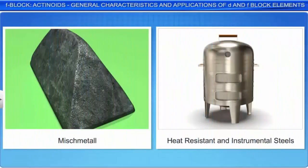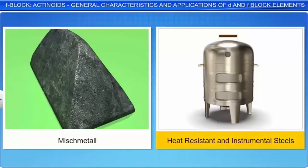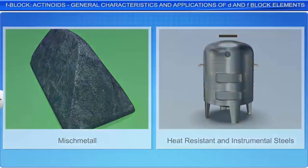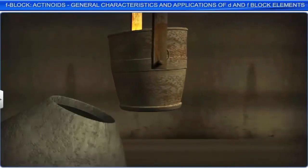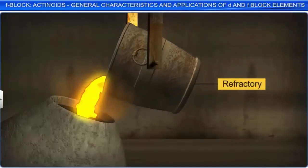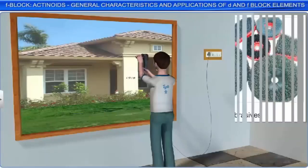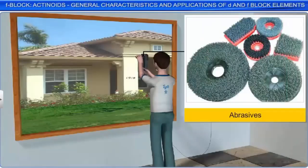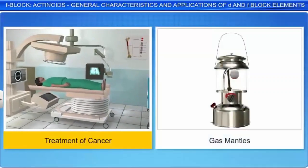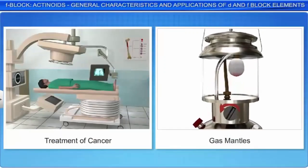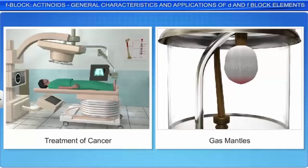Alloys of lanthanides known as Misch metals are used for the production of heat-resistant and instrumental steels. Borides, carbides, and nitrides of lanthanides are used as refractories. Lanthanide oxides are used as abrasives for polishing glass. Thorium is used in the treatment of cancer and in incandescent gas mantles. Uranium is used as a nuclear fuel. Plutonium is used in atomic reactors and in atomic bombs.